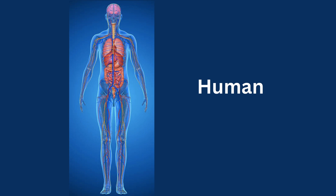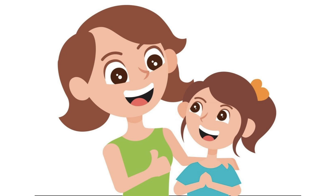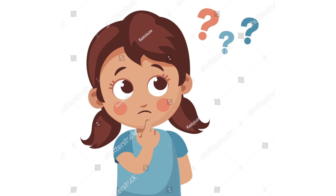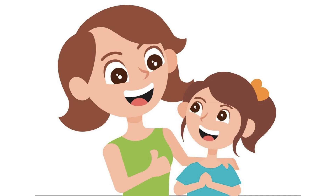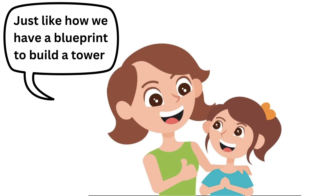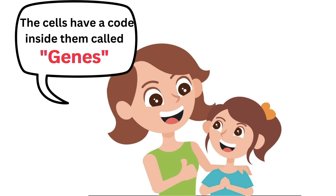So now, do you understand this? That's amazing to know ma'am. It's so interesting to learn about cellular organization. Well, I have one more question — you told that each cell performs a specific function, but how do the cells know what function to perform? Great question. Just like how we have a blueprint to build a tower using these building blocks, the cells have a blueprint inside them called genes, which carry some specific information and help the cells to perform their function.